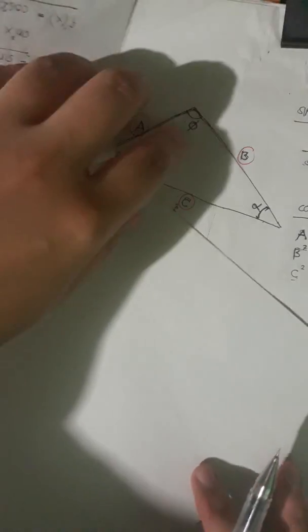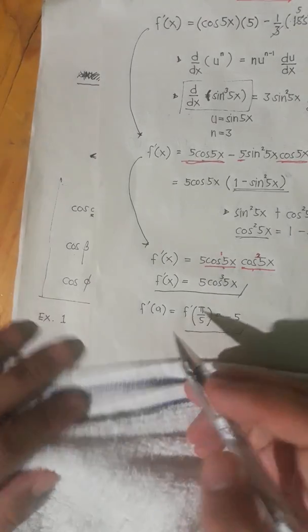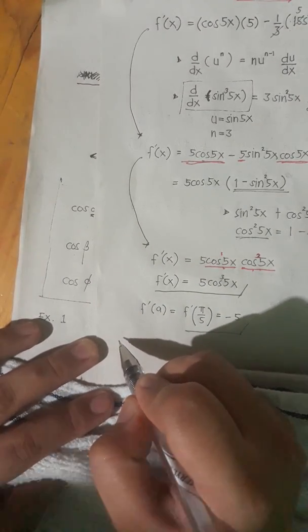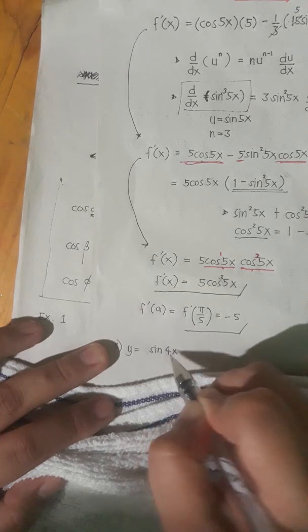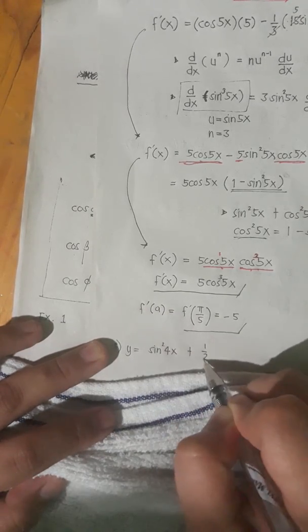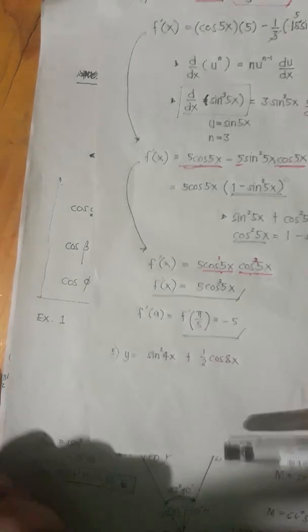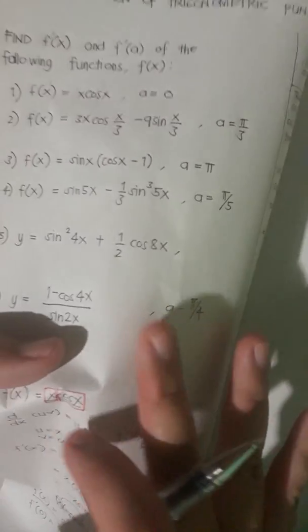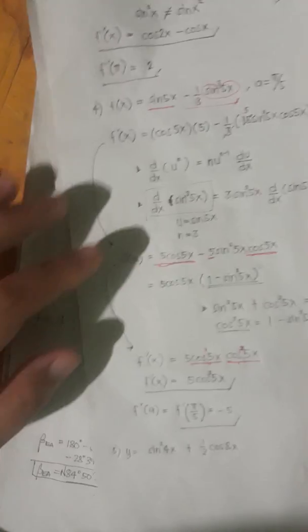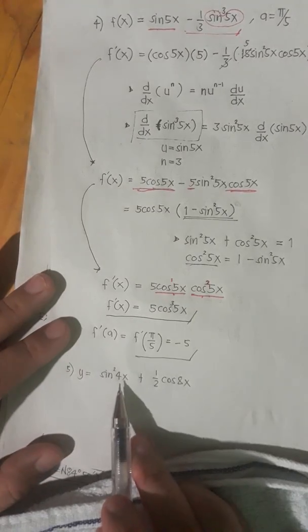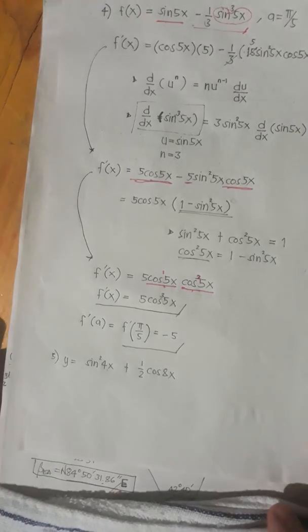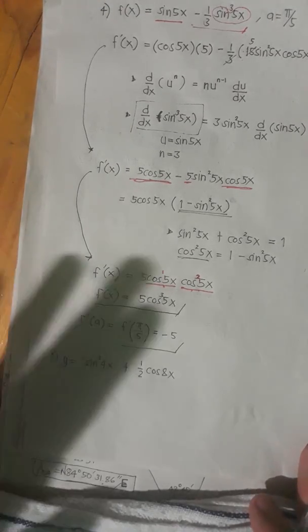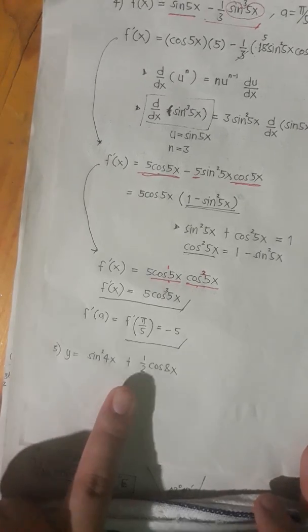Let's just rewrite that. We have number 5: y is equal to sine of 4x squared, and then we have plus 1 half of cosine of 8x. We could see here in this function there's 4x and there is 8x. We could remember a trigonometric identity that could help us make this turn into a simpler form.